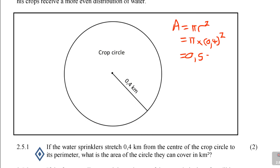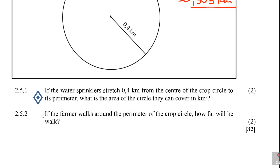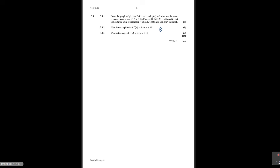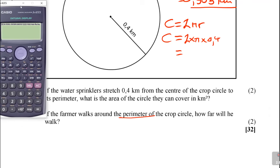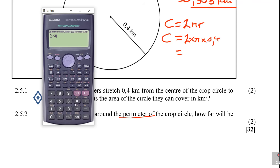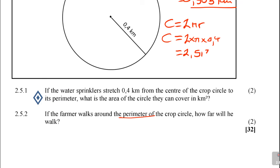So 0.503 square kilometres — don't forget to leave the units. And then, if the farmer walks around the perimeter of the crop cycle, how far will he walk? Perimeter is the circumference, so you use C equals 2 pi r. C equals 2 times pi times 0.4, which gives 2.513 kilometres to 3 decimal places.